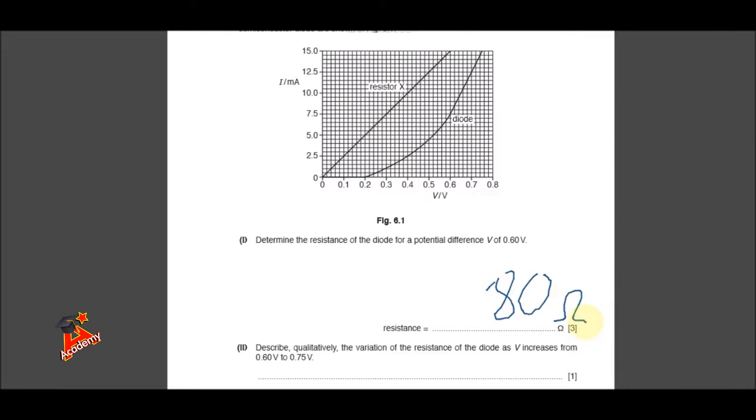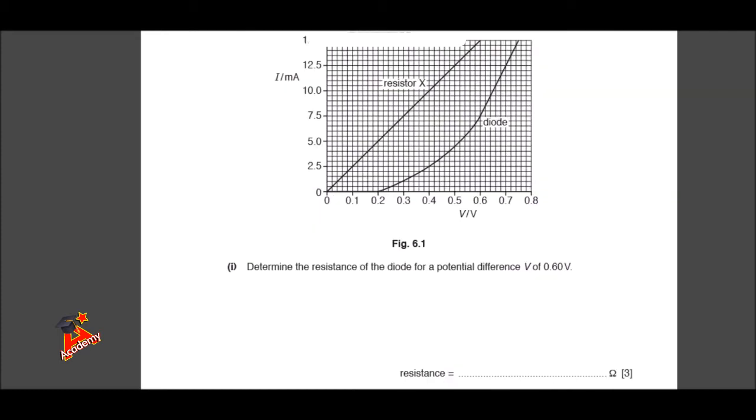Describe qualitatively the variation of the resistance of the diode as V increases from 0.6 to 0.75 volts. Qualitatively, we're just going to say, does it increase, does it decrease. In this case, the graph shows that the current increases, the resistance decreases.